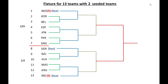The first match is between Korea and Belgium. Netherlands will be playing the second round due to bye. Belgium has won the match. The next match is between Spain and Japan — Spain has won. The match between Pakistan and England — England has won. Germany will be playing the second round. Between New Zealand and Australia — Australia has won. Between Malaysia and Argentina — Argentina has won. India will be playing the second round. Now the second round match is between Netherlands and Belgium.